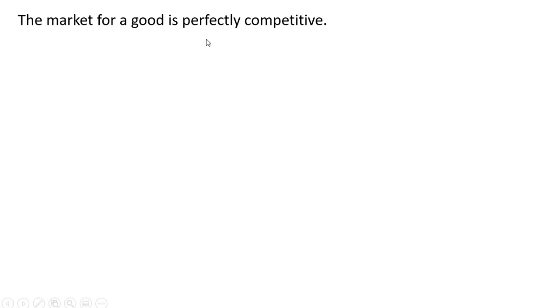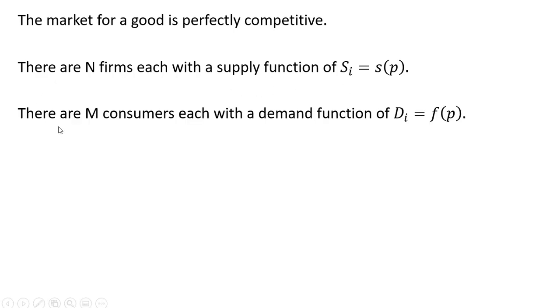The market for a good is perfectly competitive. There are N firms, each with a supply function S_i = s(p). There are M consumers, each with a demand function D_i = f(p). Note: p is the good's price.